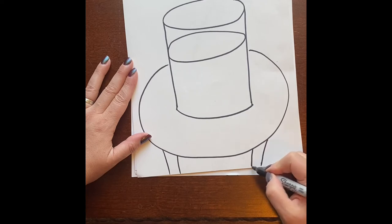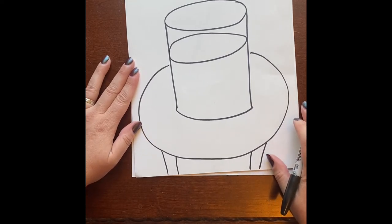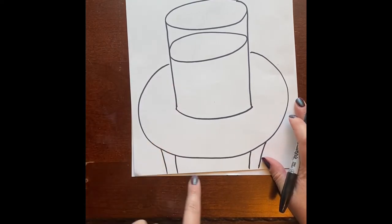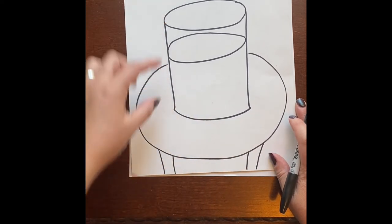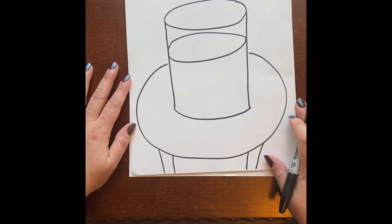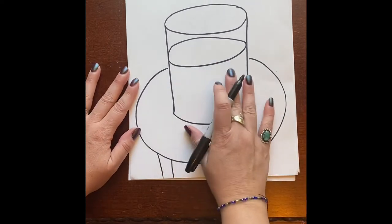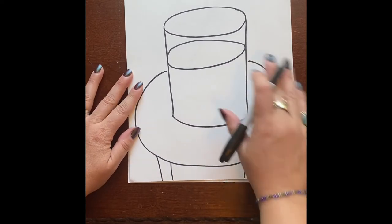There's the bottom part of the table, so you can add that too. Now your table might come down lower, that's okay. If you don't have room for the legs, or if yours is up higher and you see more of the legs, that's okay too.